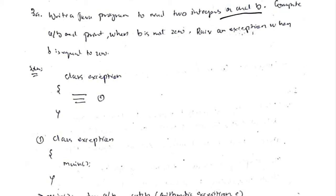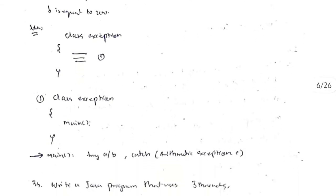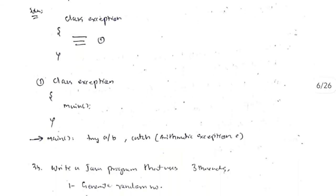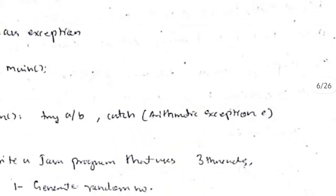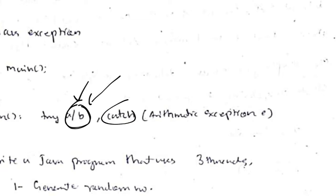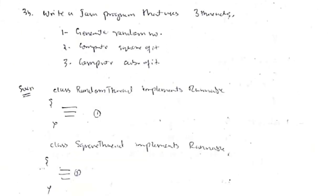3a is a simple program: we read two integers a and b, and print a/b when b is not 0; if b is 0, we print an exception. We have one class with a try-catch block. In the try block, if a/b executes, the output is printed. In the catch block, if b is 0, we print that a/b cannot be done because b's value is 0.